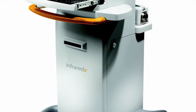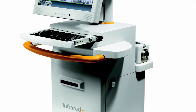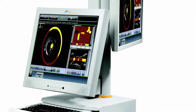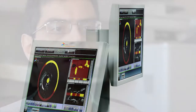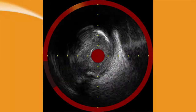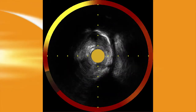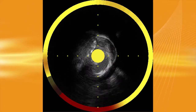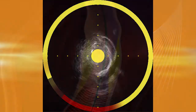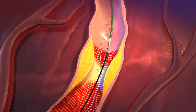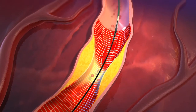Before we did the stenting, we used the combination system — the TVC combination of IVUS and near-infrared spectroscopy system on this particular patient. The reason for doing that is that in addition to getting all the information that intravascular ultrasound provides, which is reference vessel diameter and length of the lesion, we also get very good information regarding the composition of the lesion.